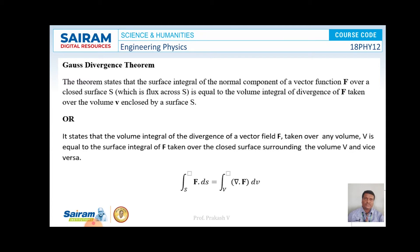Gauss Divergence Theorem states that the surface integral of the normal component of a vector function F over a closed surface S is equal to the volume integral of divergence of F taken over the volume V enclosed by the surface S, given by ∫F·dS = ∫∫∫_V (∇·F) dV. This is the Gauss Divergence equation.